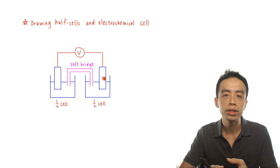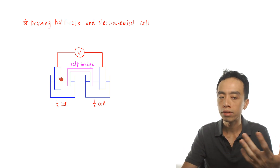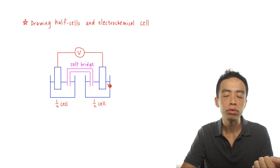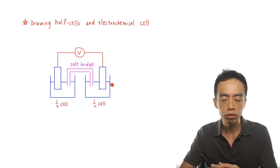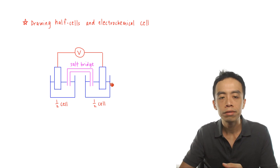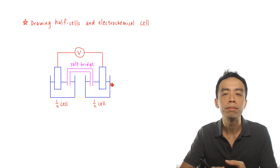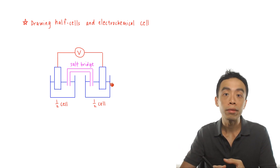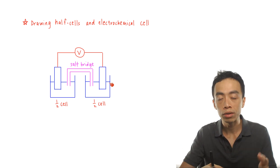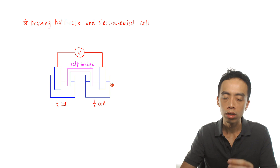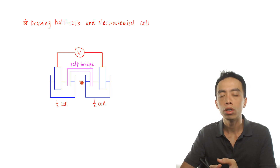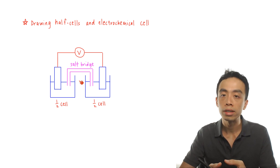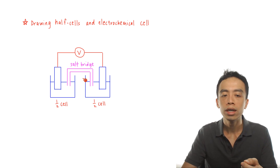In an electrochemical cell, we want the oxidation and reduction to occur at different half cells. One half cell will undergo oxidation, the other will undergo reduction, and because of that, there will be the generation of electricity — the flow of electrons from the anode to the cathode. If the reactants are allowed to mix together, then the redox reaction will occur directly between the reactants, and we don't generate electricity from a direct redox reaction. So the purpose of the salt bridge is important: it connects the two half cells so that charges can flow, while preventing the direct mixing of the reactants.